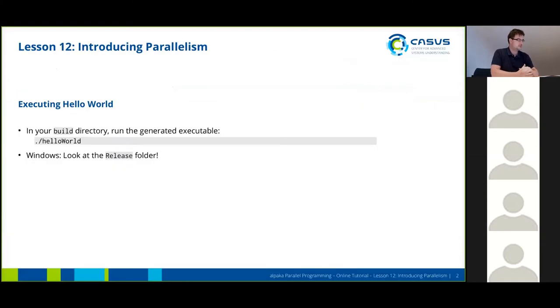So in your build directory, you should now be able to run the generated executable. If you're doing this on Windows, you first have to switch to the release folder in your build directory. Windows places the binaries in a somewhat different location, so it should just be a subdirectory of the build directory in your case.